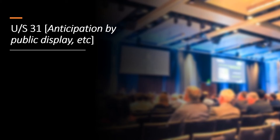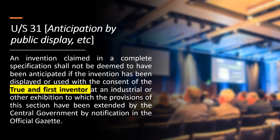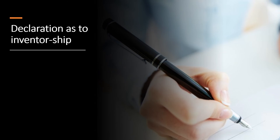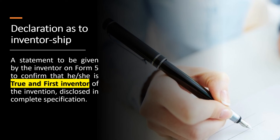Section 31, Anticipation by public display, states that an invention claimed in a complete specification shall not be deemed to have been anticipated if the invention has been displayed or used with the consent of the true and first inventor at an industrial or other exhibition to which the provisions of this section have been extended by the central government by notification in the official gazette. At the time of filing a patent application, a declaration as to inventorship has to be submitted on Form 5, to confirm that he or she is the true and first inventor of the invention disclosed in the complete specification.